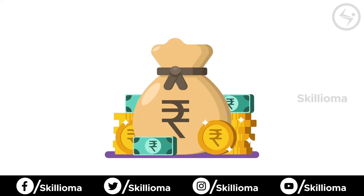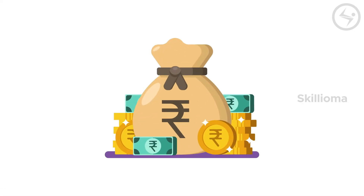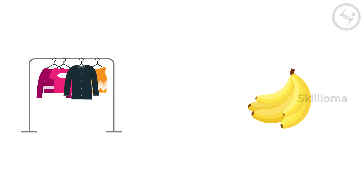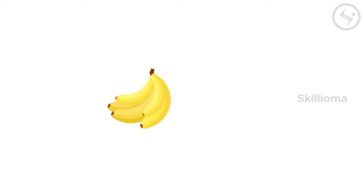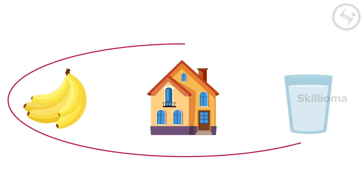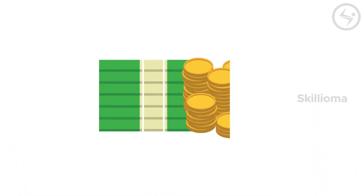Money, money, and money — we need money for everything, right from buying our favorite outfits to eating our favorite food. Without money we cannot survive. Funny isn't it? They say the basic needs of man are food, shelter, and water, but somebody forgot to add money to this list.